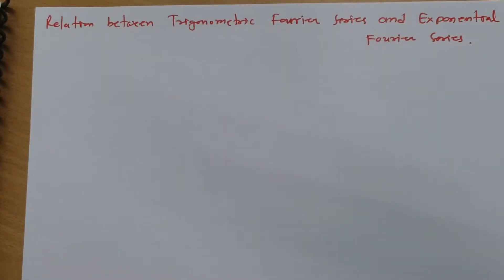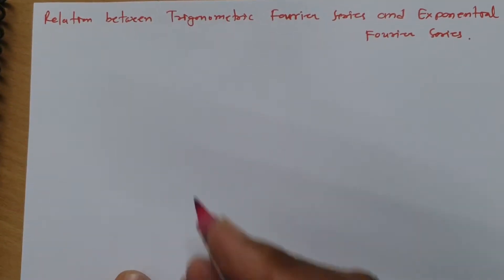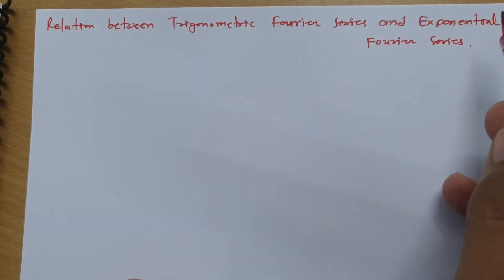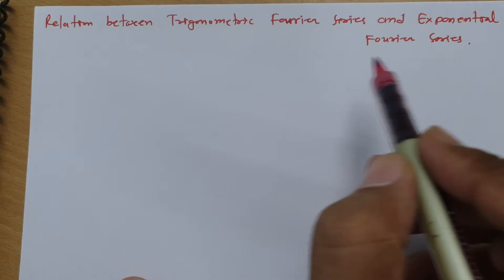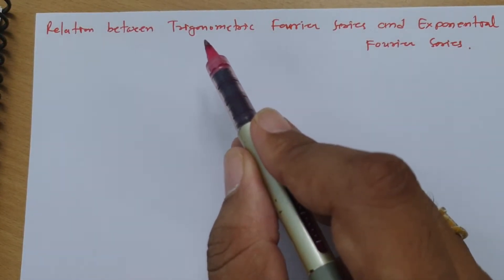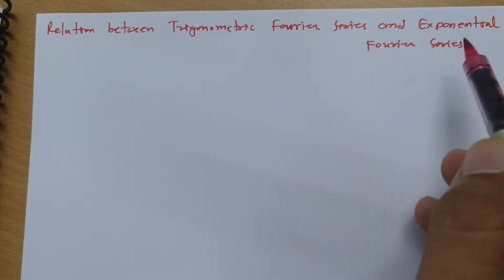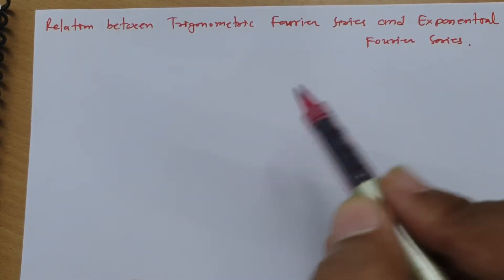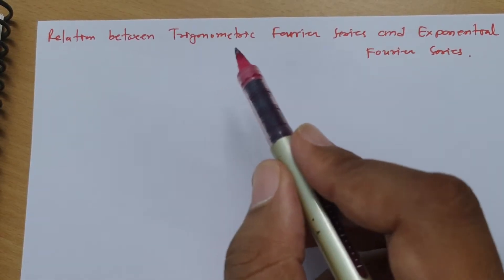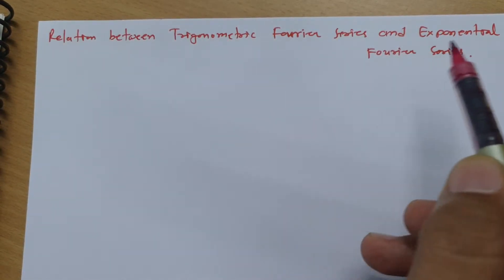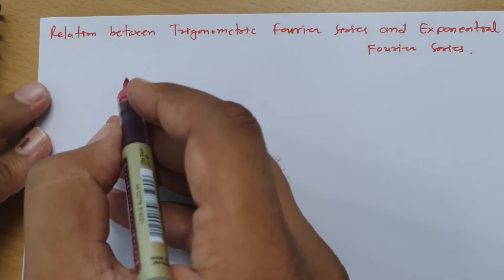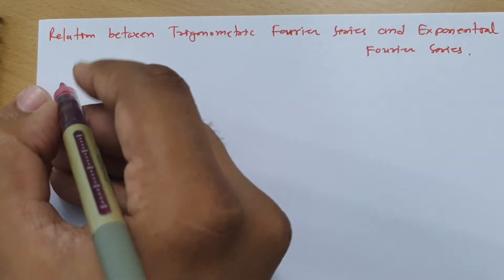Welcome to the signal and system lecture series. In this session, I will be explaining the relation between trigonometric Fourier series and exponential Fourier series. In the previous two sessions, I have already explained how to represent trigonometric Fourier series and exponential Fourier series. In this session, I will be deriving the relationship between the coefficients of trigonometric Fourier series and exponential Fourier series. Let me write first what is trigonometric Fourier series.